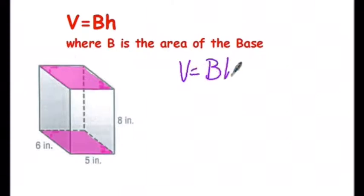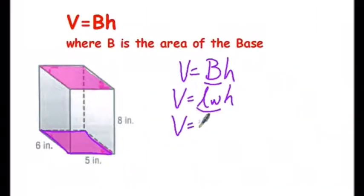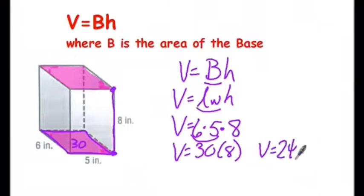In this one, V equals Bh. So again, the base is a rectangle, so we replace the B with length times width. In this case, it's 6 times 5 gives us 30 for the base times 8 for the number of layers. So 30 times 8 is 240 cubic inches.